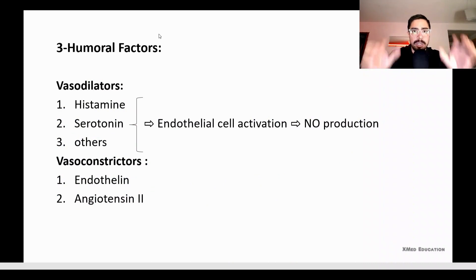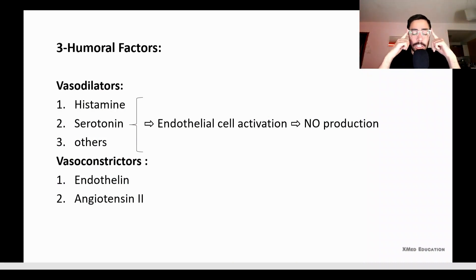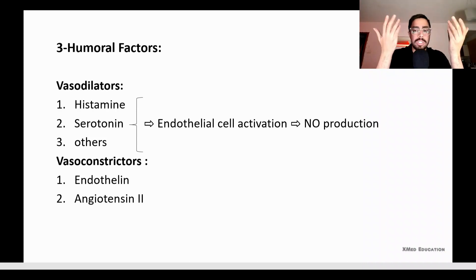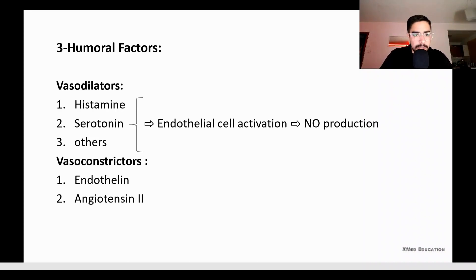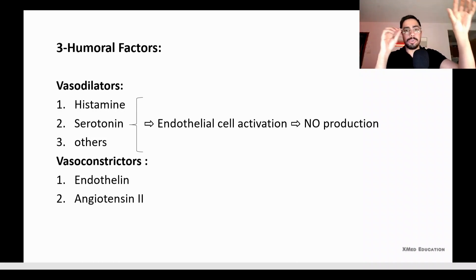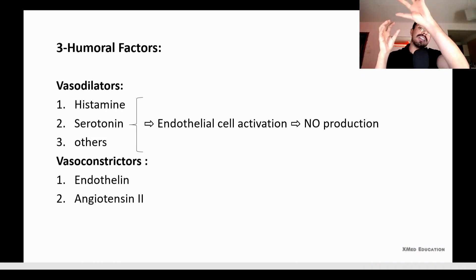What are the humoral factors? This is very important when explaining vasodilators and vasoconstrictors. Humoral factors include histamine, serotonin, and others. Histamine and serotonin cause endothelial cell activation, which produces nitric oxide, causing vasodilation. Vasoconstrictors include endothelin — you must know that endothelin causes vasoconstriction. Humoral factors are local factors: one cell releases them and they affect other cells in the same tissue.